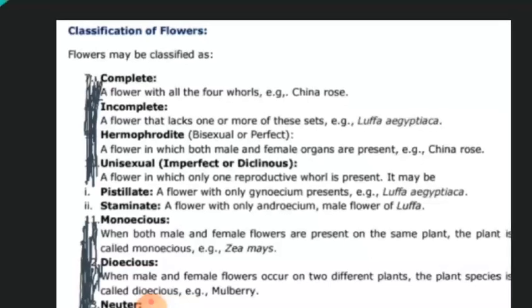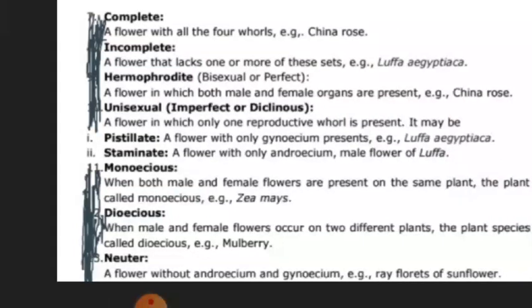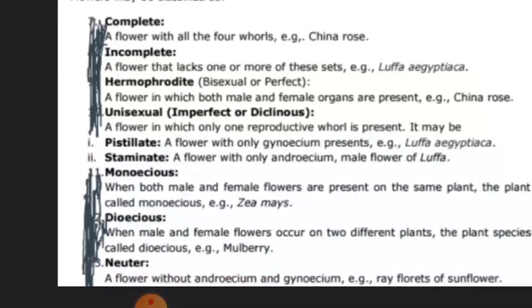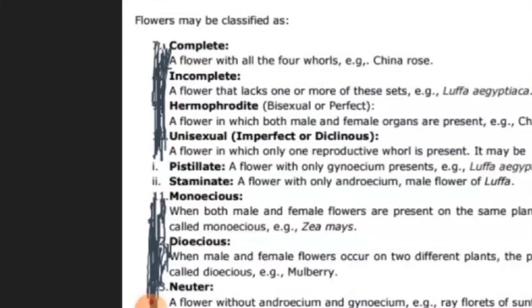The first is the complete flower — that is a flower having all the four whorls: sepalous, petalous, androecium, and gynoecium. In short, we can say that a flower having all four whorls — that is aceri whorls and rebloid whorls — that flower is said to be a complete flower. It is found in china rose and other flowers.